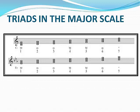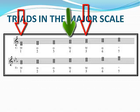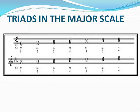Here we have triads that are built on each degree of the C major scale. We have a mixture of major and minor triads, as well as a diminished triad on the 7th degree of the scale. We're only going to look at the major and minor triads at this level. In the major scale, the primary triads found on the 1st, 4th, and 5th degrees of the scale are major triads. Again, we see the importance of that tonic-dominant-subdominant relationship.